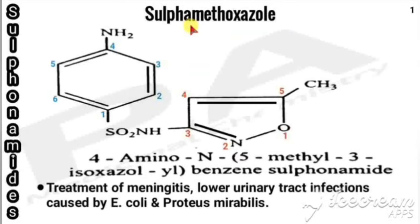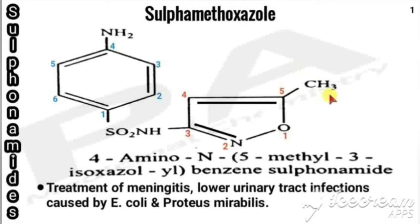This is the fourth class of sulfonamides, continuing with important sulfadrugs. First we will see sulfamethoxazole. The basic nucleus present in sulfonamides is the sulfanilamido group: a benzene ring with NH2 and SO2-NH. Attached to the sulfanilamido group is the isoxazole ring. According to priority order, oxygen gets higher priority, so the methyl group is attached at the fifth position and the isoxazole is connected to NH at the third position. Its chemical name is 4-amino-N-(5-methylisoxazol-3-yl) benzene sulfonamide. It is used in the treatment of meningitis and lower urinary tract infections caused by E. coli and Proteus mirabilis.